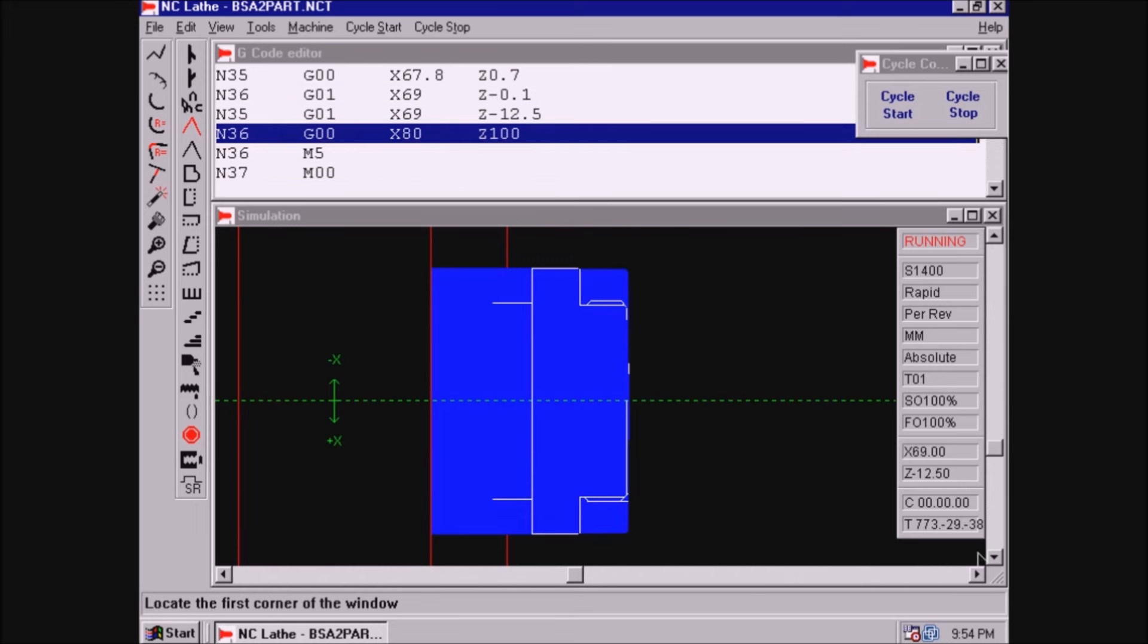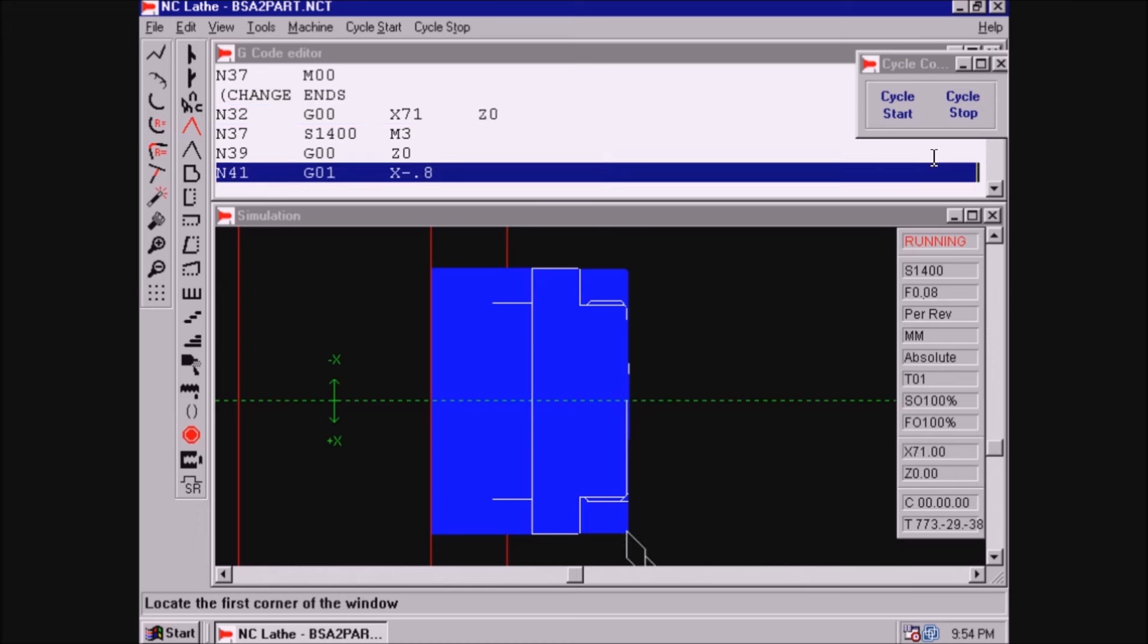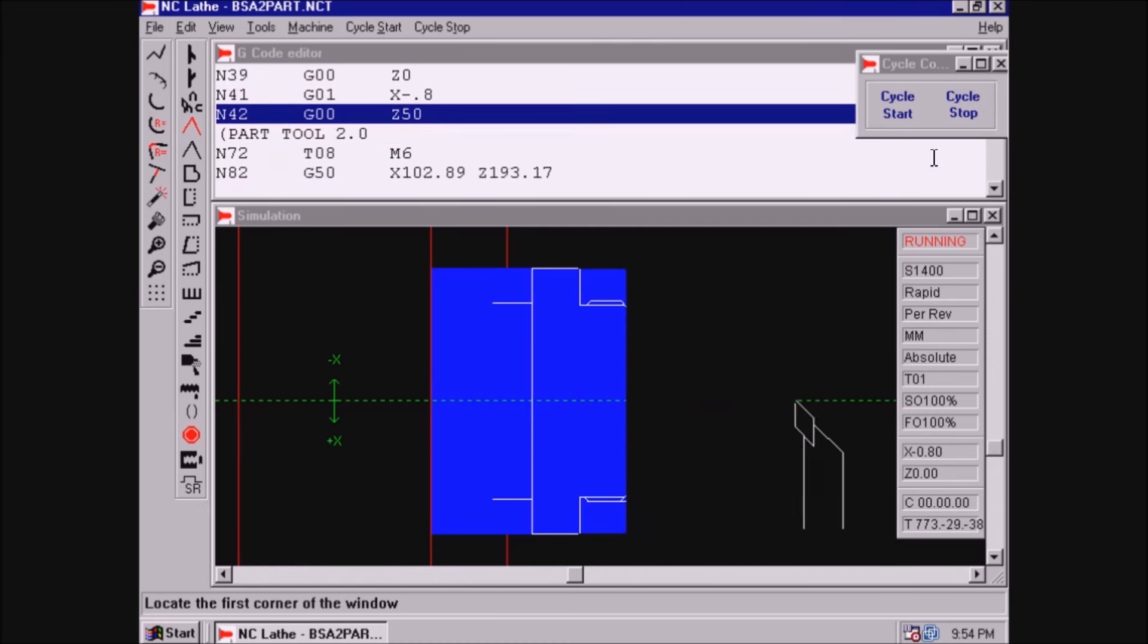Here's the simulation with the program halt so that I could take it out and turn the part around and continue on with the program.